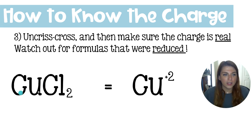If you have the full chemical formula like CuCl2, you can uncrisscross to figure out what the charges were. So this two came from up here, Cu+2, and there is an imaginary one right here that had come from the chlorine. It's important to see if your charges may have been reduced when they got turned into quantities.